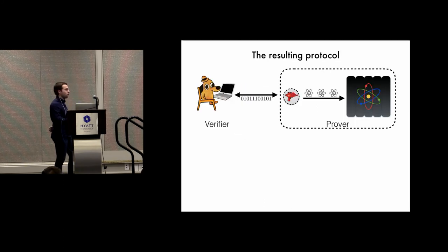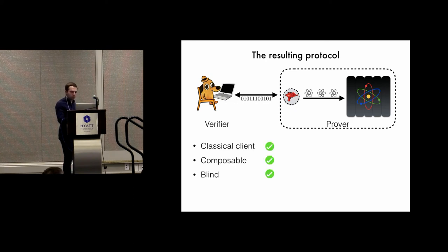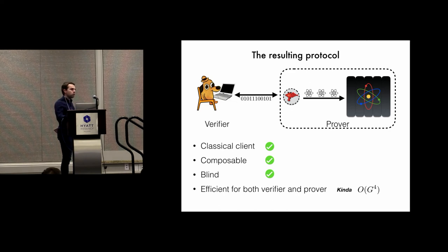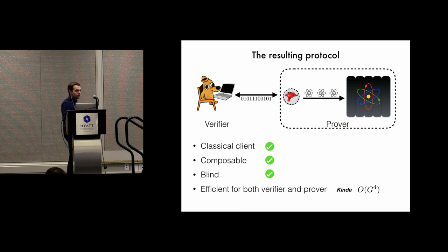The resulting protocol essentially simulates the preparation of states in the prover system, and then we can run the Fitzsimmons-Kashefi protocol with the prover. So we get a protocol where we have a classical client, it's composable, and it's blind in a computational sense. Efficiency is a maybe — we actually get a slightly worse overhead than in Mahadev's protocol, ordered g to the fourth. But importantly, this g to the fourth is only in the remote state preparation part. The actual quantum computation requires only linear time and linear communication, and we have ideas for how to reduce this to linear as well, but that's for future work.